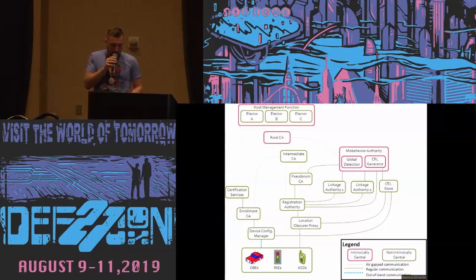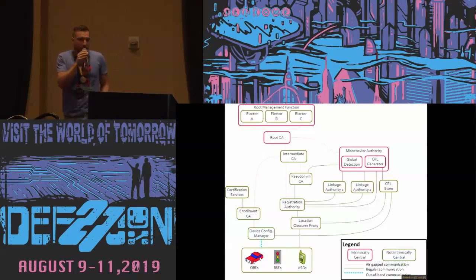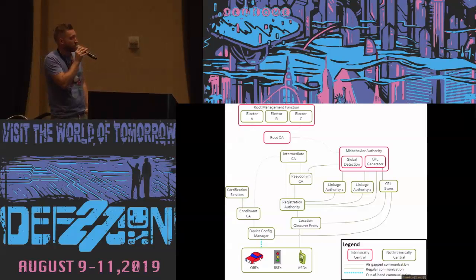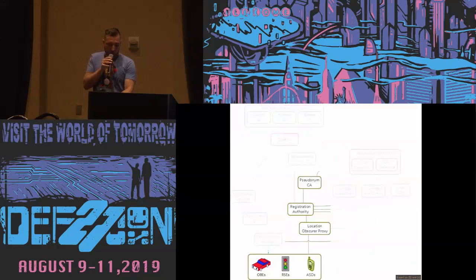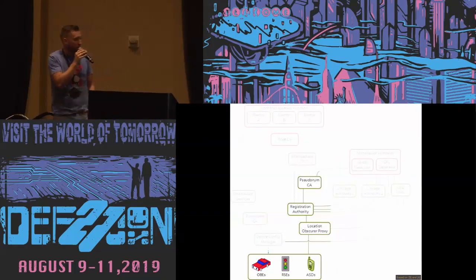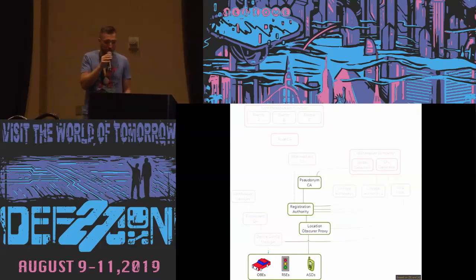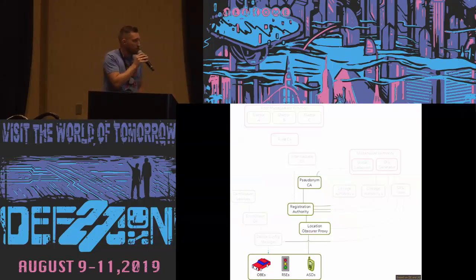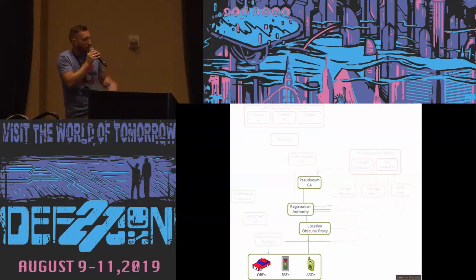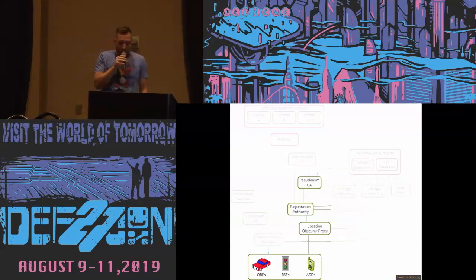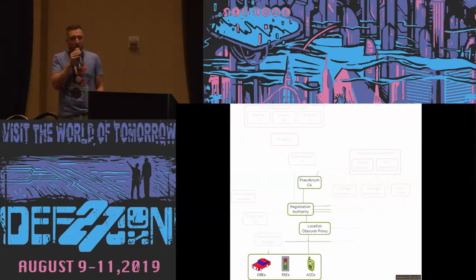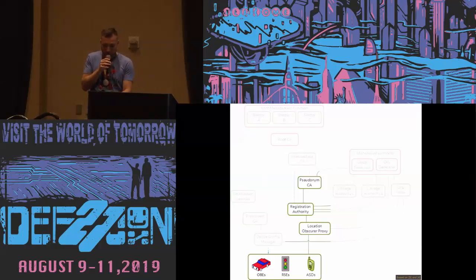In the overall architecture — this is the PKI as currently proposed in the United States, the EU looks slightly different but is similar in principle — I want to focus on the components directly involved in issuing certificates to devices: the Registration Authority, the Pseudonym CA, and a Location Obscure Proxy in between to remove IP addresses so nobody knows where the vehicle was when requesting certificates.